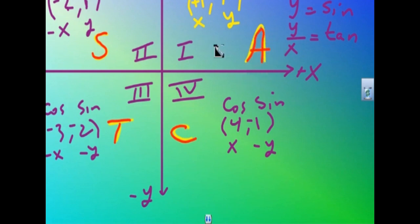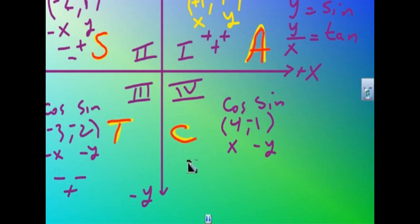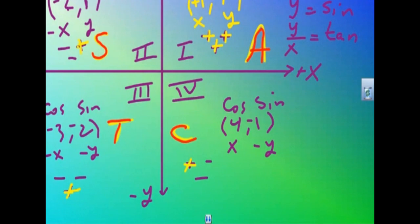In the first quadrant, all trig functions are positive — sine, cosine, and tangent. In the second quadrant, only sine is positive; cosine and tangent are negative. In the third quadrant, only tangent is positive; cosine and sine are negative. In the fourth quadrant, cosine is positive, while sine and tangent are negative. Make sure you really get that — it's the foundation.